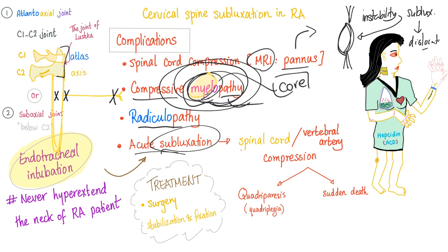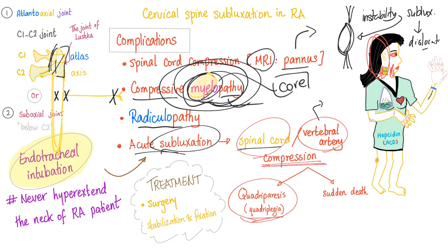Acute subluxation will lead to compression of the spinal cord or compression of the vertebral artery. You can even get an ischemic stroke of the posterior half of the brain, because that is supplied by the vertebral artery — the carotid supplies the front, the vertebral supplies the back. Compression can result in quadriparesis or quadriplegia, inability to move, weakness, and even sudden death due to brainstem involvement. Subluxation is a very serious matter.